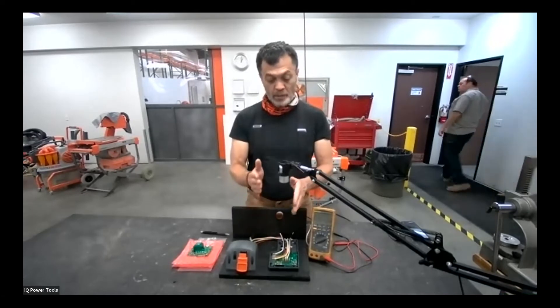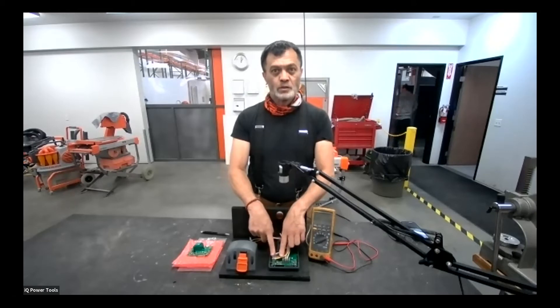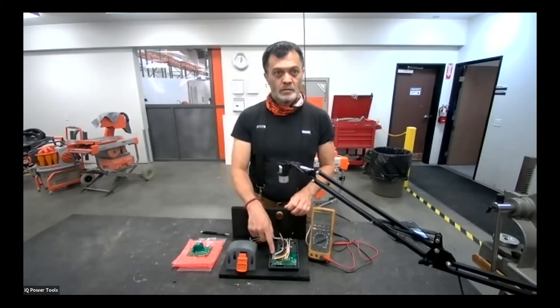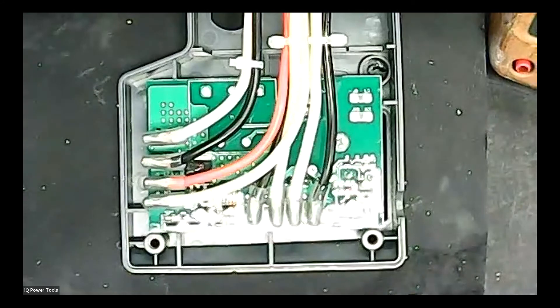Again, the PCB board is split into two sections vacuum side. Let's switch to a PCB camera. All right, let me turn the light off real quick so that you guys get a better view.